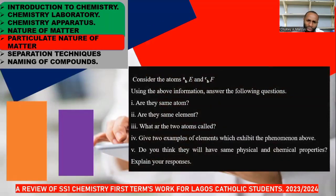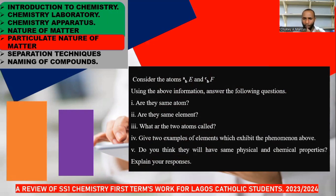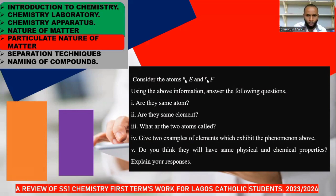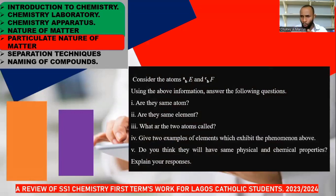In particulate nature of matter, we are looking at particles that make up matter. An atom is the smallest particle of an element that can take part in a chemical reaction. A molecule is the smallest particle of a substance that can exist alone and still retain the chemical properties of that substance. An ion is any atom or group of atoms that has a charge. The atom is made up of protons, electrons, and neutrons. The proton is positively charged, the electron negatively charged, and neutron is neutral. Protons and neutrons are found in the nucleus and both can be called nucleons. Electrons are found at the shell or in an orbital.